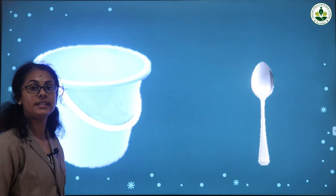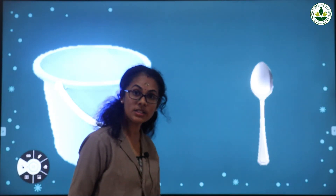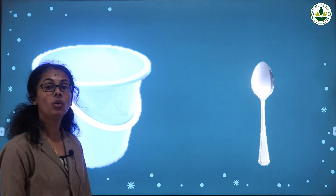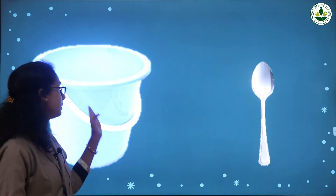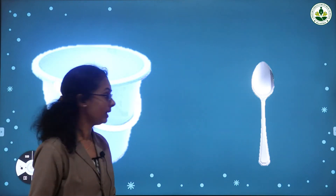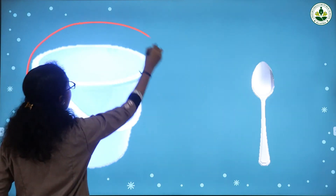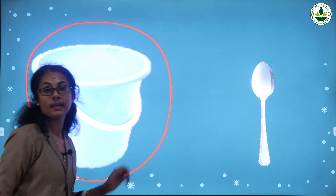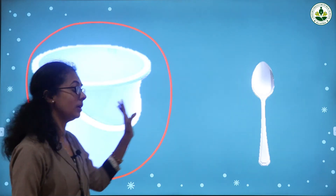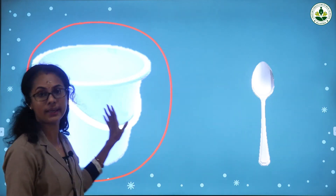Now look at these two pictures. The first one is a bucket and the second one is a spoon. Compare these two — which contains more water, the bucket or the spoon? The bucket contains more water. So which one has more capacity? The bucket.